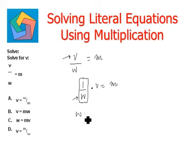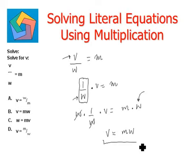So W times 1 over W times V equals M times W. Now this multiplication has to be done on the other side also in order to maintain the balance. This W and 1 over W becomes 1, so we are left with V equals MW. This is the final answer which matches option B.